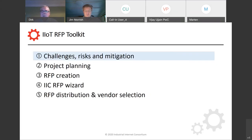We will structure this discussion along the different modules of IIC's RFP toolkit, which has five elements. First, we have challenges, risks and mitigation in RFP management for IoT solutions. Then we have project planning, which typically is a mixed bag between general project planning and specifically the planning of the RFP projects. Then we have the actual RFP documents and how to create the RFP document. Then we have IIC's online wizard for RFP creation, and finally we will talk about the process of distributing the RFP and vendor selection.